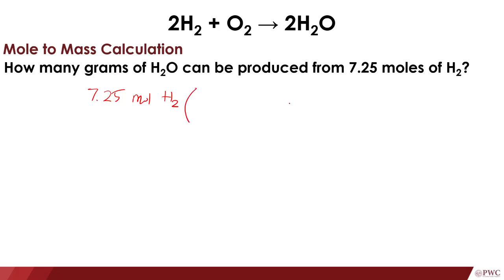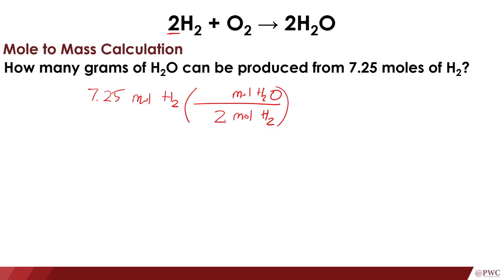So for this one, we first need to convert from moles of H₂ to the moles of H₂O. This conversion uses the molar ratio. For the mole of H₂, just look in the balanced chemical equation — the ratio here is 2 moles of H₂ to 2 moles of H₂O.